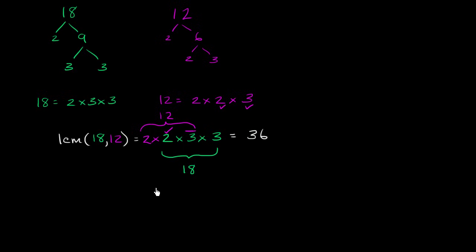And we are done. Now, the other way you could have done it is what I would say just the brute force method of just looking at the multiples of these numbers. You would say, well, let's see, the multiples of 18 are 18, 36, and I could keep going higher and higher, 54, and I could keep going.